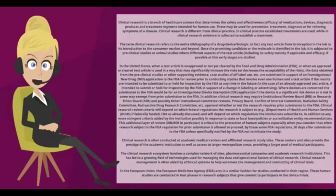Once the promising candidate or molecule is identified in the lab, it is subjected to preclinical studies or animal studies, where different aspects of the test article — including its safety, toxicity if applicable, and efficacy if possible at this early stage — are studied. In the United States, when a test article is unapproved or not yet cleared by the Food and Drug Administration (FDA), or when an approved test article is used in a way that may significantly increase the risks or decrease the acceptability of risks, the data obtained from preclinical studies or other supporting evidence (case studies, off-label use, etc.)